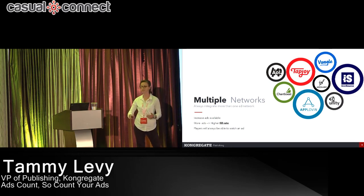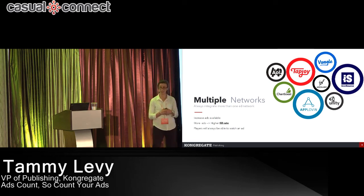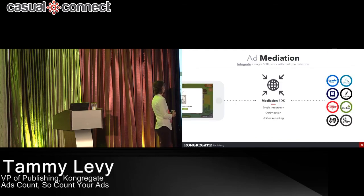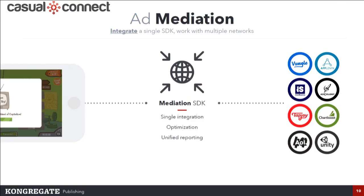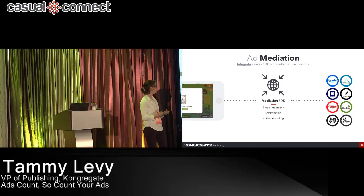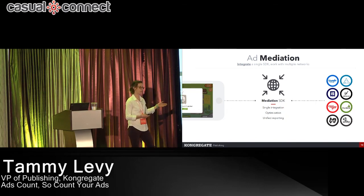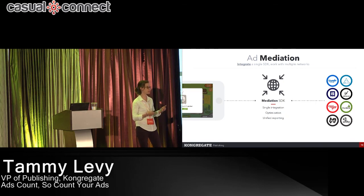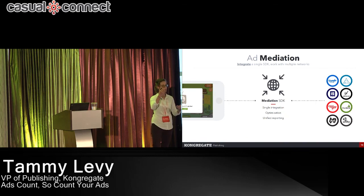But integrating five or ten different networks is really hard and time-consuming. There's technology that helps with this — ad mediation. These are ad networks that provide a single SDK you integrate into your game. From there, you enable certain networks, so with a single integration you can get six to ten networks working all at the same time. They also have auto-optimizations — algorithms that try to generate the most revenue based on all those networks.